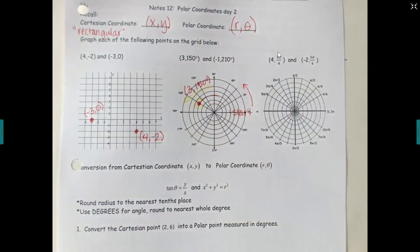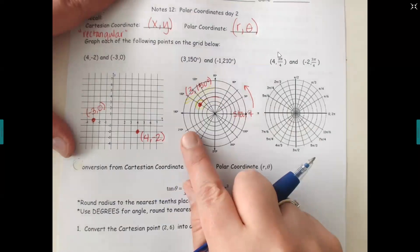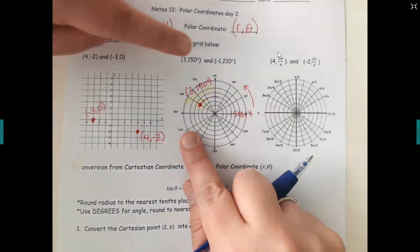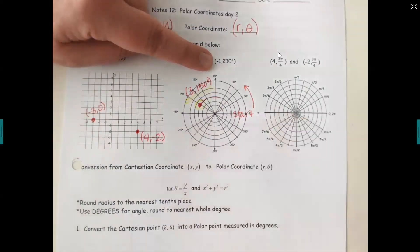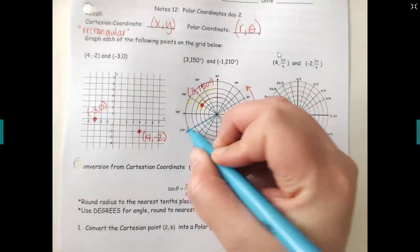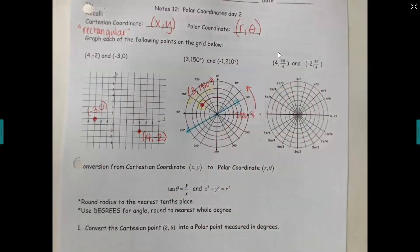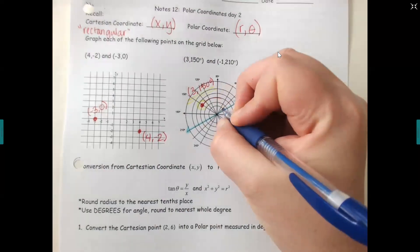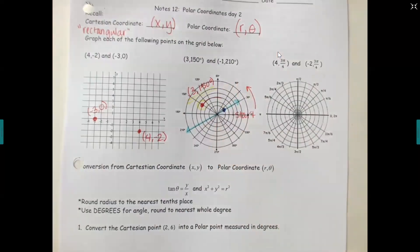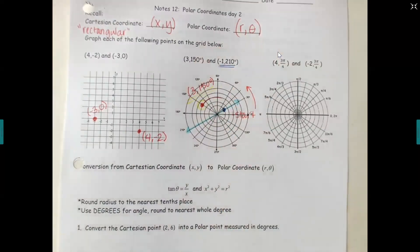Let's look at the next example. You have a negative radius. So we're still going to find the angle first. So I want 210, that's here. But then if I have a negative on my radius, do I go towards that angle or away? Away. So if 210 is this way, then I'm going to go this way. How many rings? One. So that would be right there for negative 1 comma 210.